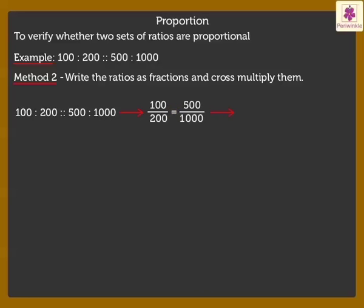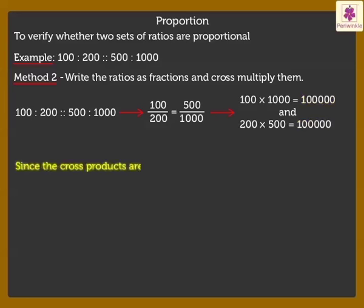On cross-multiplying, we get 100 into 1000 is equal to 1 lakh and 200 into 500 is equal to 1 lakh. Look, here the cross-products are equal. Since the cross-products are equal the ratios form a proportion.